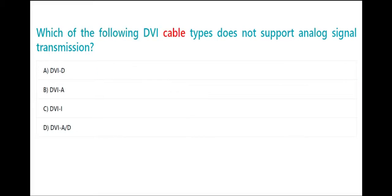Which of the following DVI-I cable types does not support analog signal transmission? A. DVI-D B. DVI-A C. DVI-I D. DVI-A-D. The correct answer is A. DVI-D.